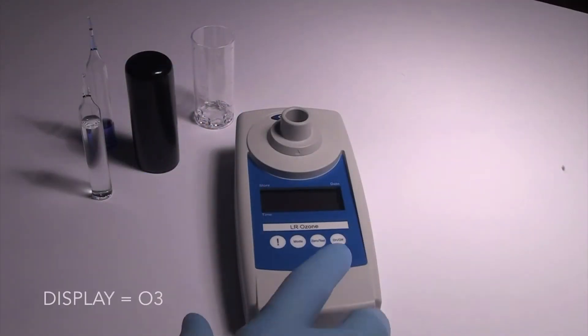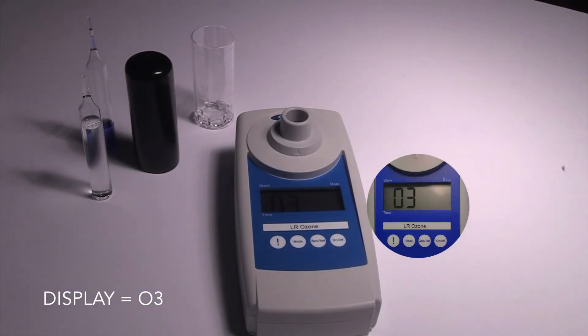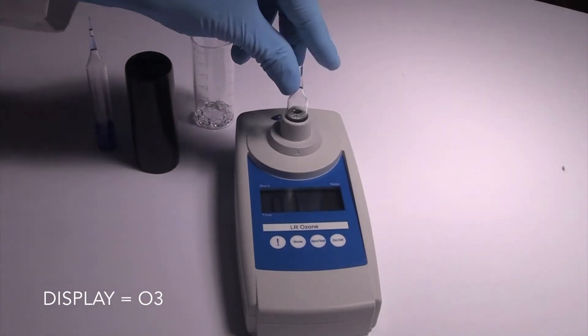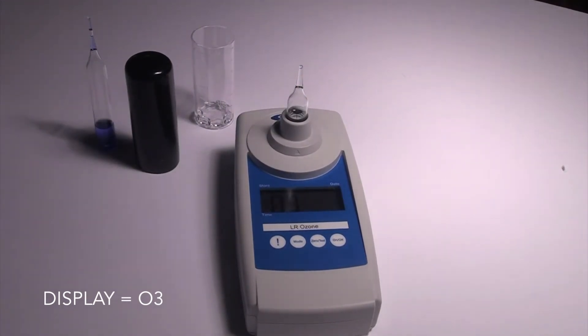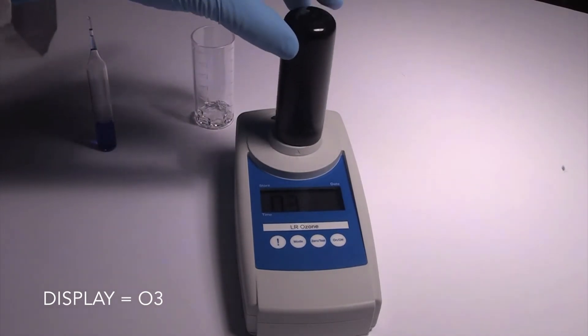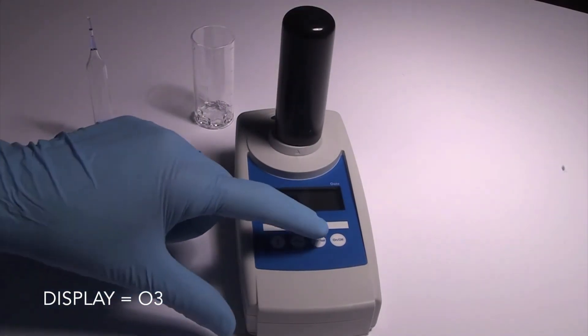To begin, zero the SAM. Press the ON-OFF key. The display will show O3 for ozone. Insert the zero ampoule flat end first into the sample cell compartment, making sure that it's fully seated. Place the light shield over the zero ampoule. Press the zero test key.